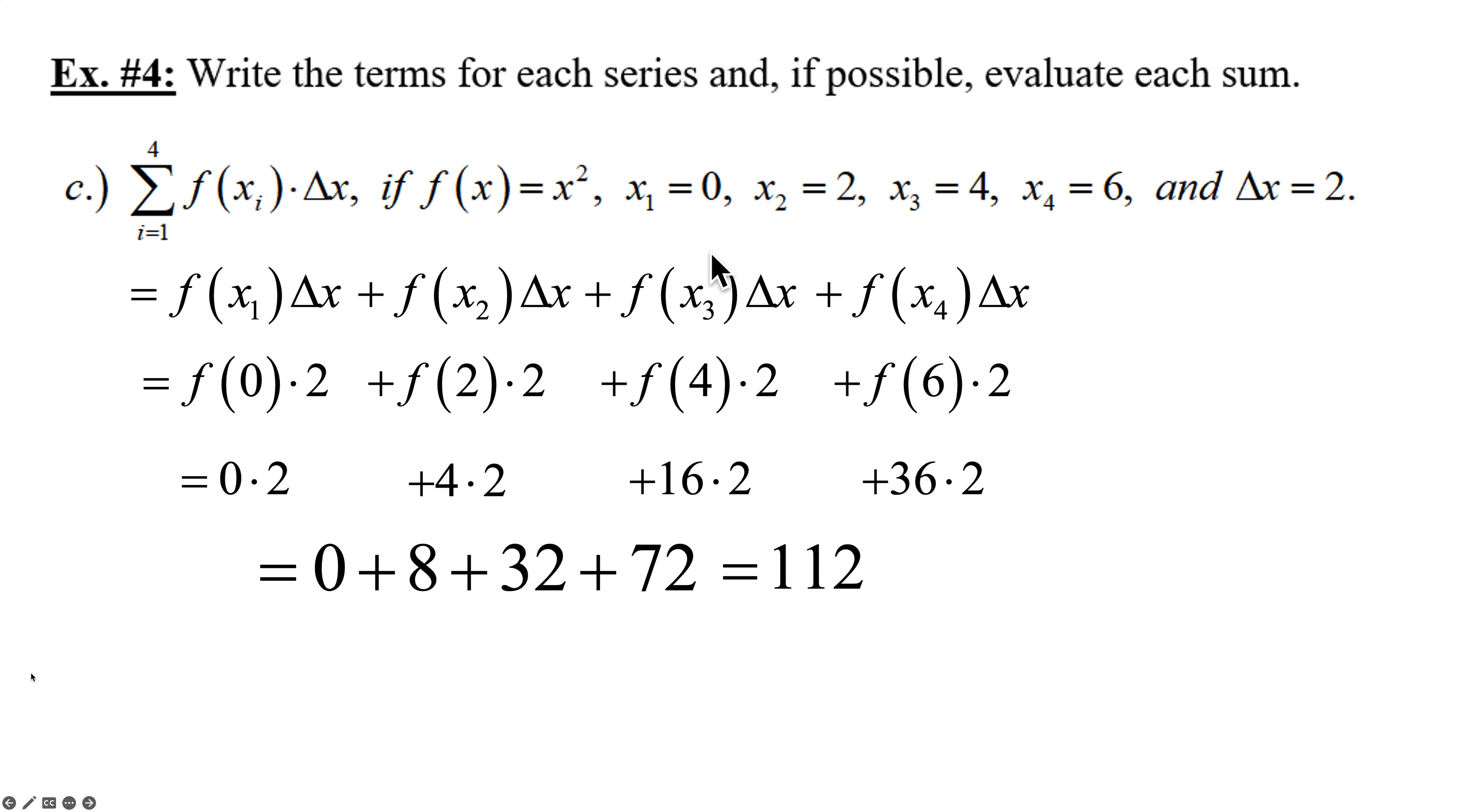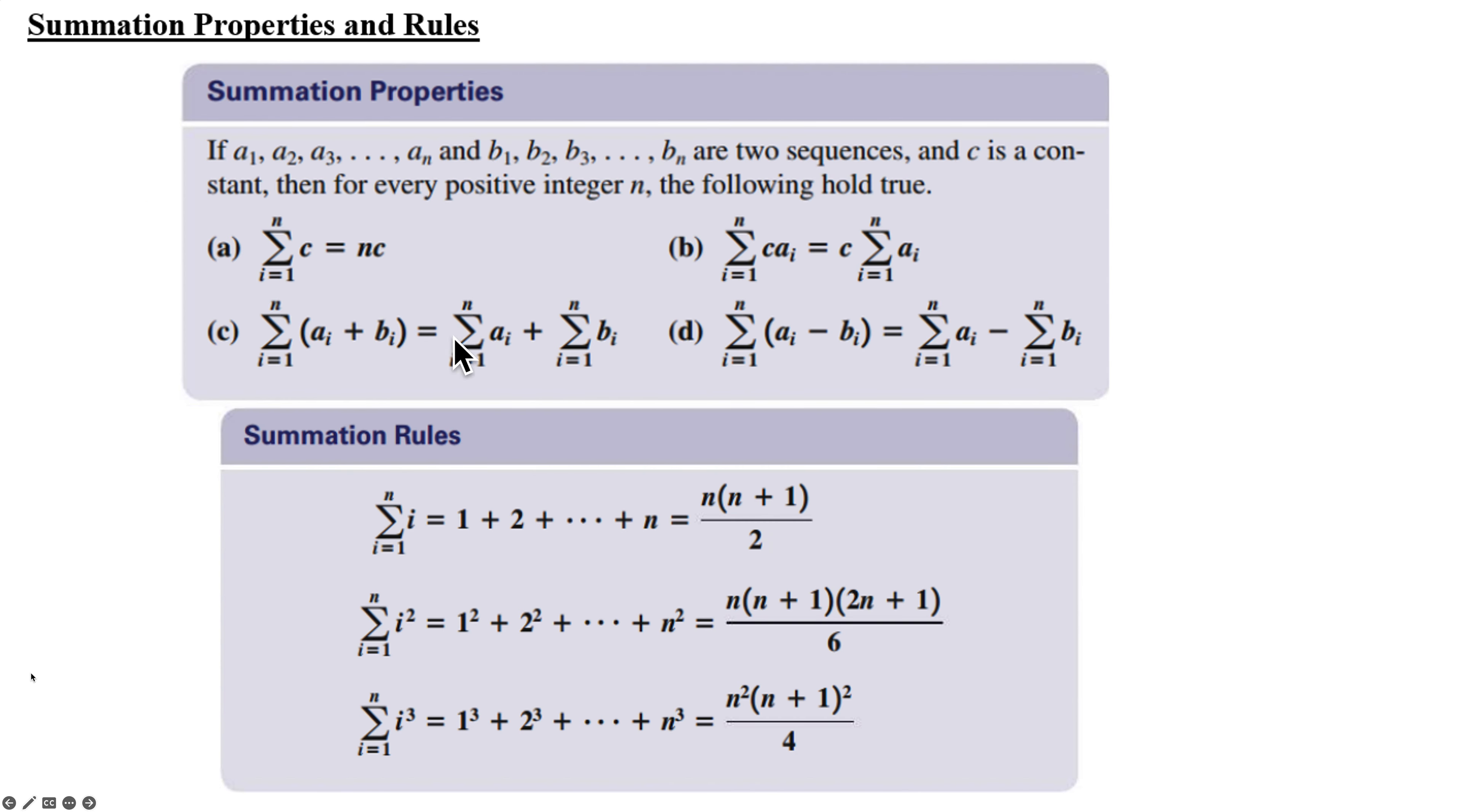Now, for all these examples, notice our upper limit was very small because these are things I'm going to ask you to list out the terms to make sure you understand the definition of summations. Well, what happens when we get some really big upper limits? Well, we have some properties that we want to use. The a sub i and b sub i's are going to represent sequence functions, a sub n, b sub n. c is going to represent a constant. Your n will be positive integers as normal.